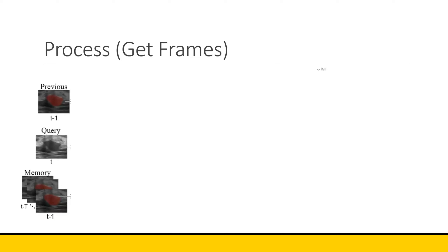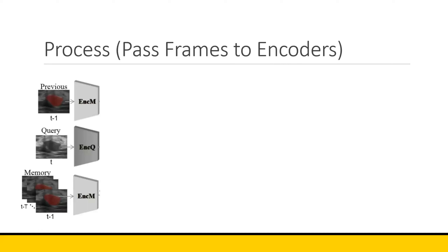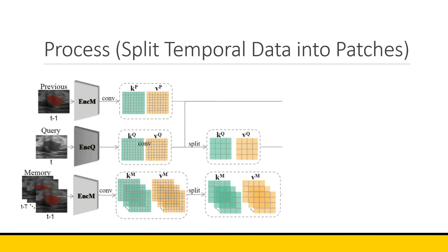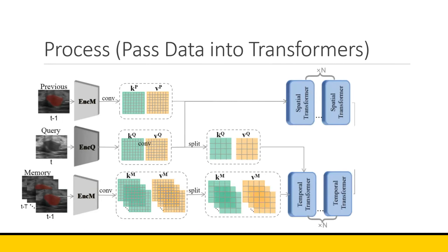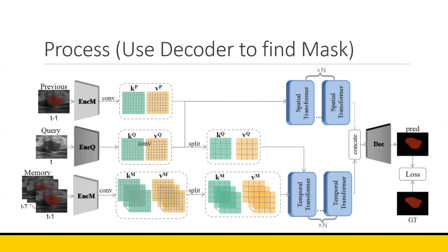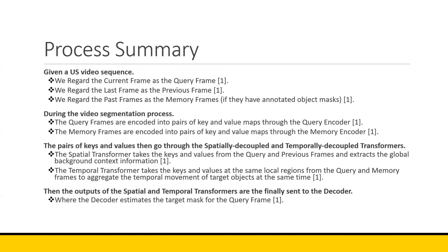Here's a process overview: we get the query frame, the previous frame, and all memory frames. The encoders convert that information into key and value pairs. That information is then split for temporal use by breaking it into distinct patches. All that information is sent to the spatial and temporal transformers, which can be stacked. That information is then concatenated and sent to the decoder, where binary cross-entropy and dice loss are used to predict the lesion mask.